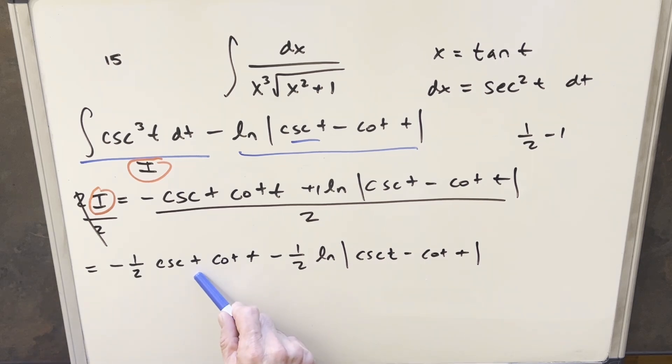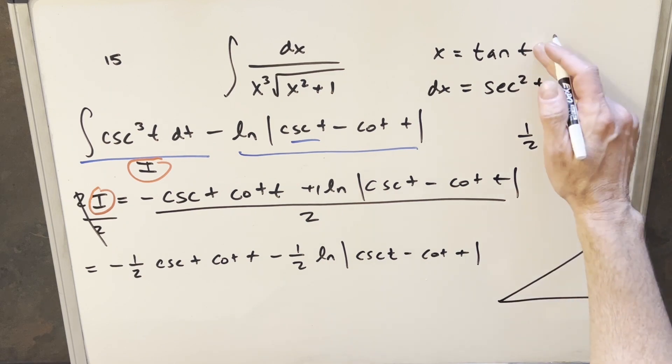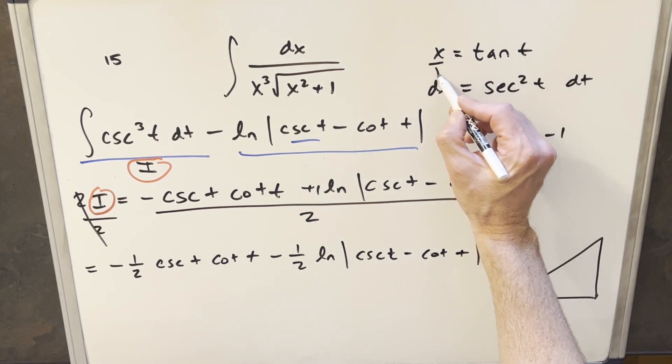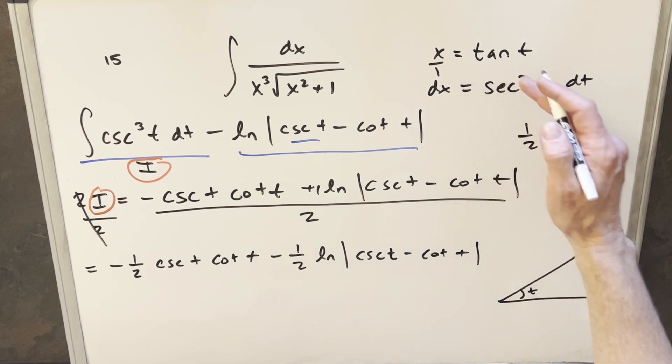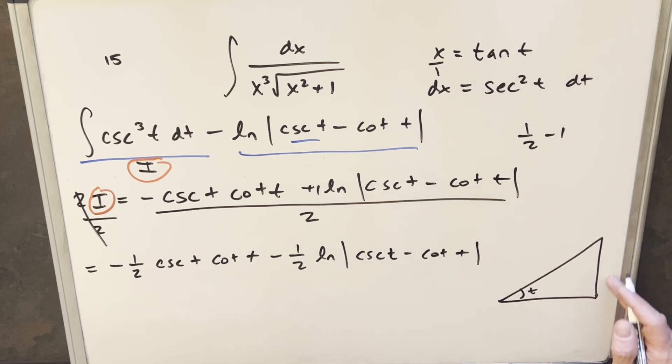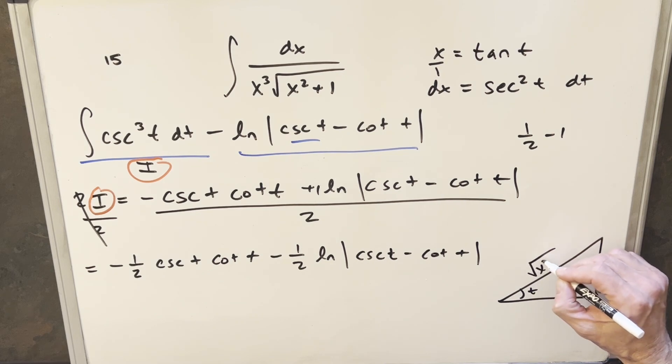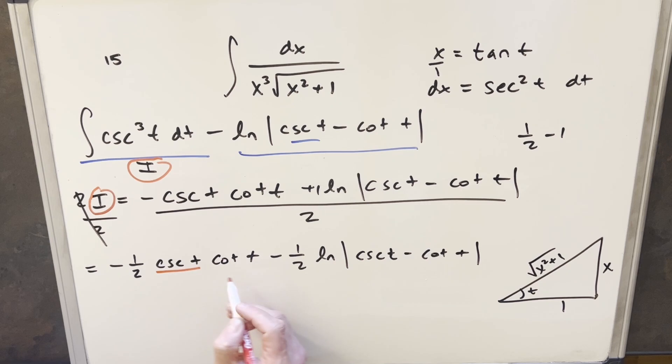The only problem we have is we have everything in terms of t, and we want to get back to x. So what I can do for that is let me just draw my triangle and see if I can squeeze it in over here. So all we know is we know tan of t is x, and I can write x as x over 1. So if we draw a triangle with our angle t, and tan of t is x over 1 or opposite over adjacent, I can write it like this. Then using Pythagorean theorem, let's find the third side, and that's just going to be square root of x squared plus 1.